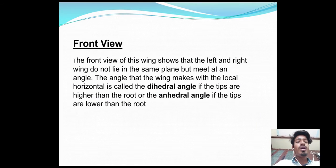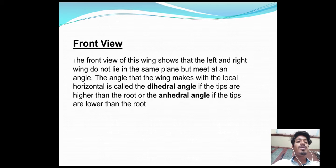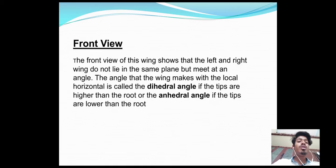The front view of the wing shows that the left and right wings do not lie in the same plane. The angle that the wing makes with the local horizontal is called the dihedral angle if the tips are higher than the root, or the anhedral angle if the tips are lower than the root.